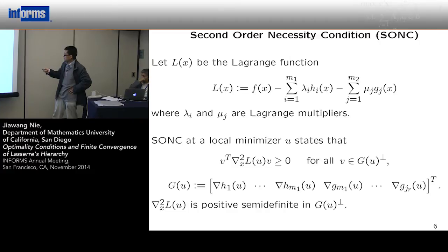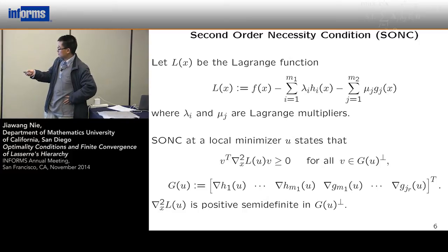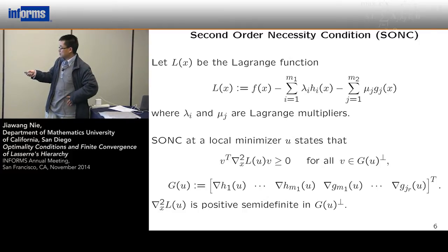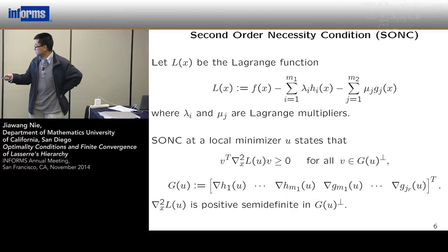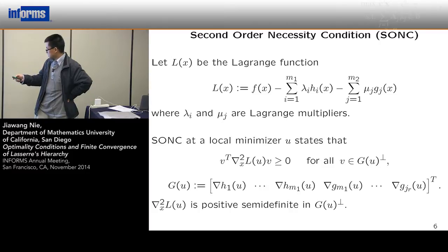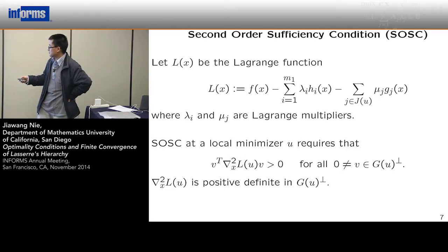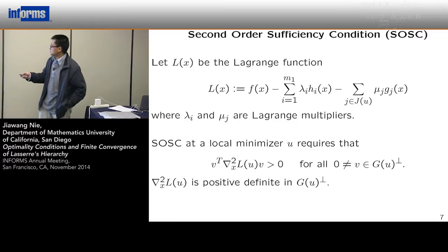Suppose lambda and mu are the Lagrange multipliers. Then we can form the Lagrangian function. The second order necessary condition says: suppose u is a minimizer, then the Hessian of the Lagrangian function is positive semi-definite in the tangential space of the gradients. Similarly, we have the second order sufficiency condition, which requires the Hessian of the Lagrangian to be positive definite in the tangential space. These conditions are standard ones in nonlinear programming theory.